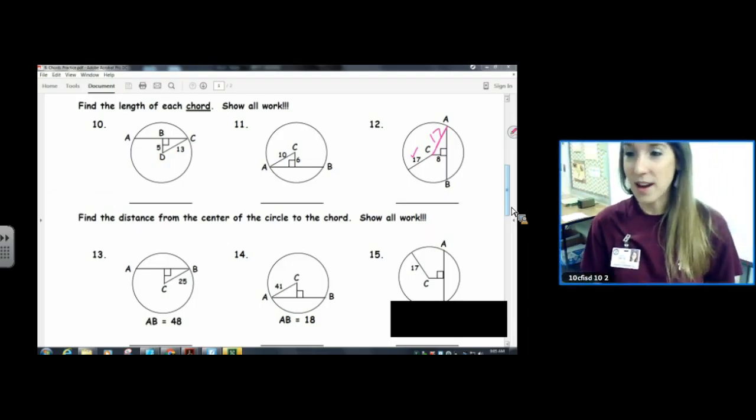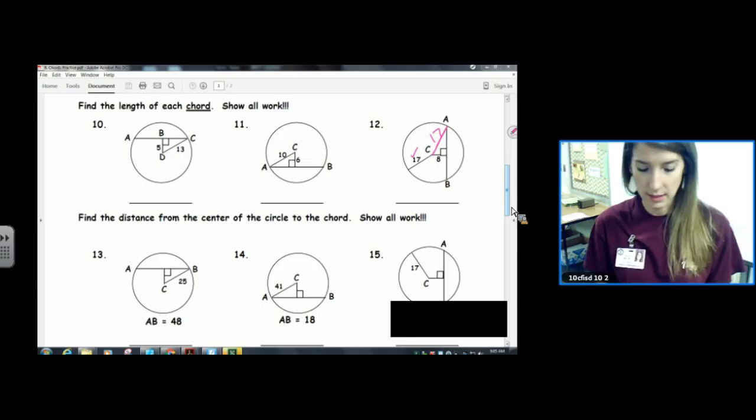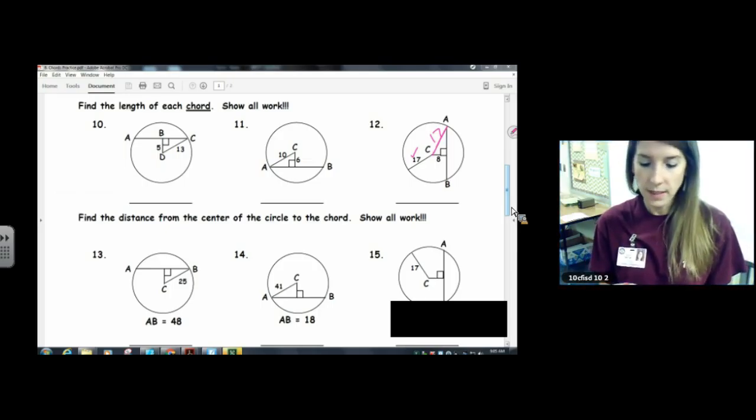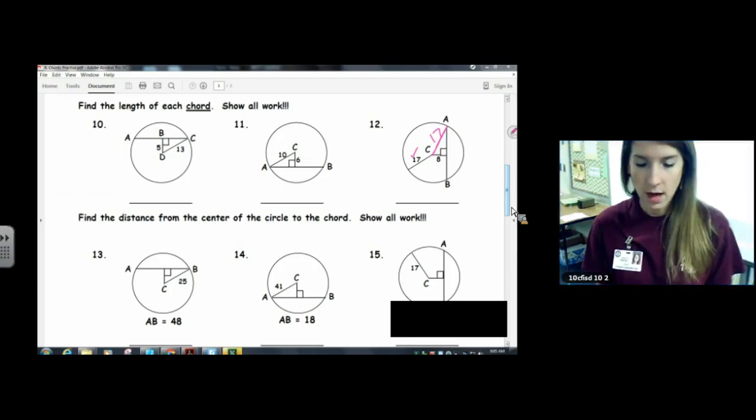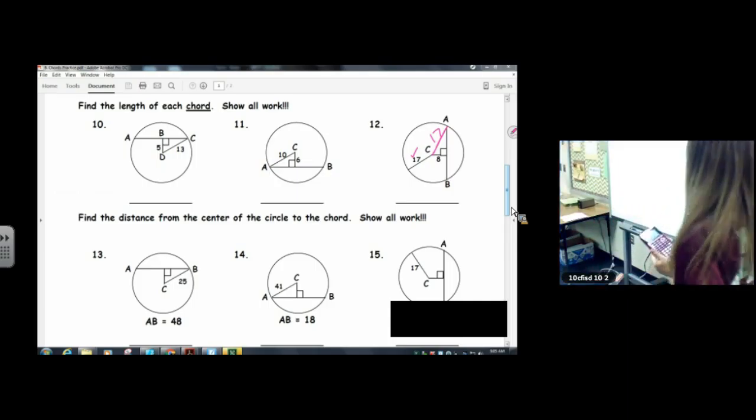And now I have a right triangle because that right angle was given to us. So I'm going to do Pythagorean Theorem. 17 squared minus 8 squared. And I'm going to take the square root and I'm going to get 15.